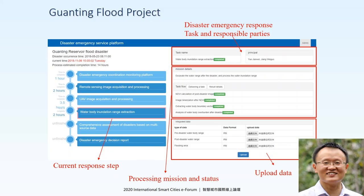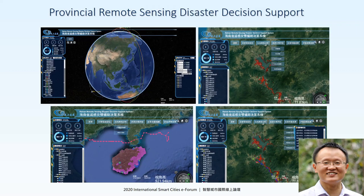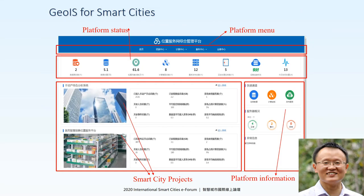Then we move this design infrastructure to support the provincial disaster decision support. It supported the Hainan province remote sensing disaster decision support system. Hainan province was also affected by a typhoon. Here is a typhoon trajectory, and we can do the analysis using algorithms available in the background infrastructure. This shows the flood analysis — the flood area in this area, and then how many villages or people were affected by this event.